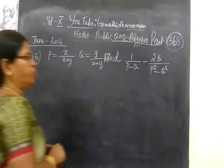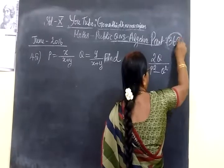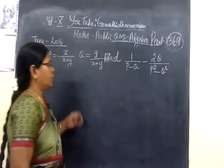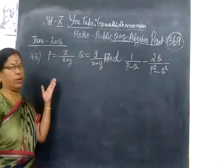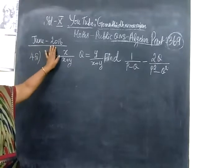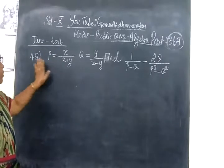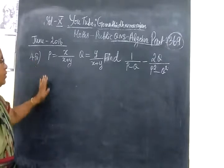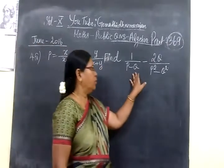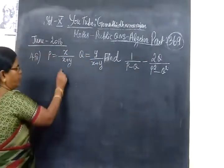So now we see part 369 and the product. This is coming under our Bambi question, June 2016, comparison question number 45. We have given P value and Q value in the problem.